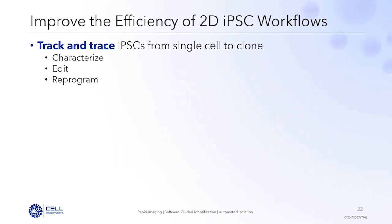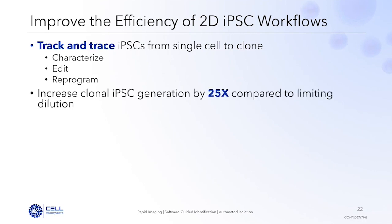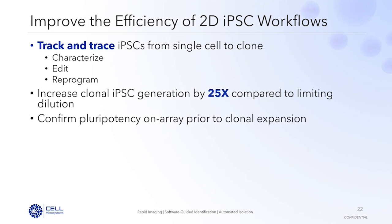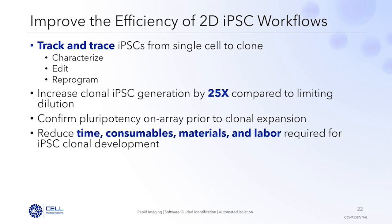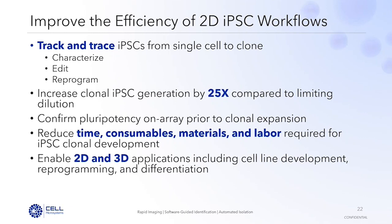To summarize the 2D workflows: we can track and trace IPSCs from single cell to clone, enabling all IPSC workflows including characterization, editing, and reprogramming. We can increase clonal IPSC generation by 25 times compared to limiting dilution, confirm pluripotency or other phenotypic marker expression on the array prior to clonal expansion, and eliminate downstream bottlenecks. We can also reduce time, consumables, material, and labor required for complicated IPSC clonal workflows, and enable 2D and 3D applications including cell development, reprogramming, and differentiation. I'm going to switch gears to talk about the 3D work done with IPS cells, and also setting up Erin's portion of the talk.